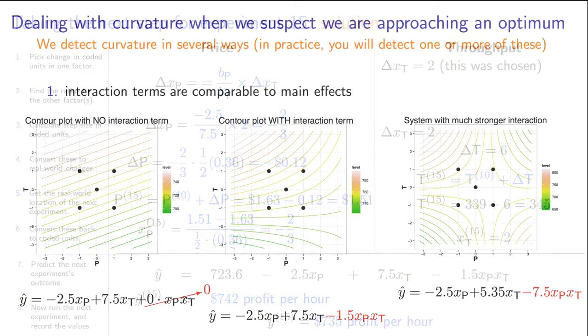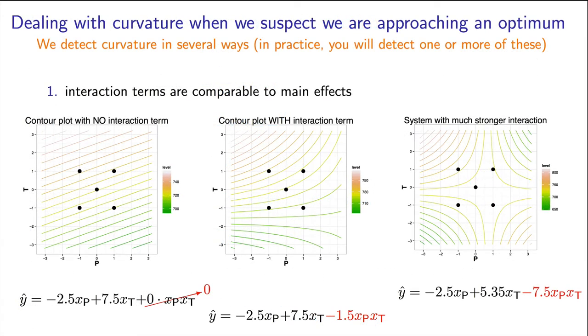When we start to enter a region of curvature in response surface methods, it is the presence of a change in the surface's linearity that's apparent. We're becoming more non-linear, and likely approaching an optimum. It is desirable to know when this is happening. And one indication of that is that our interaction terms are large. They cannot be ignored. And visually, we see that as these non-parallel lines in the contour plot.